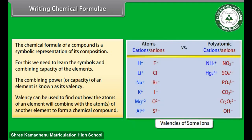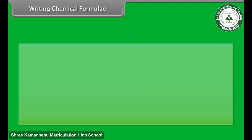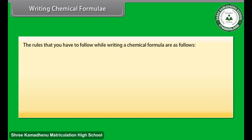The valencies of some simple and polyatomic ions are given in the table. The rules that you have to follow while writing a chemical formula are as follows: the valencies or charges on the ion must balance.